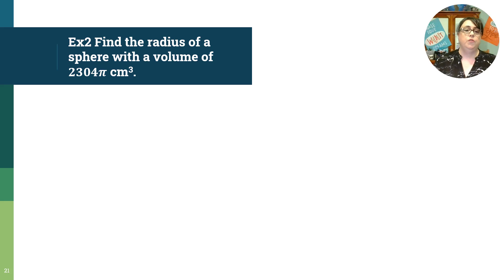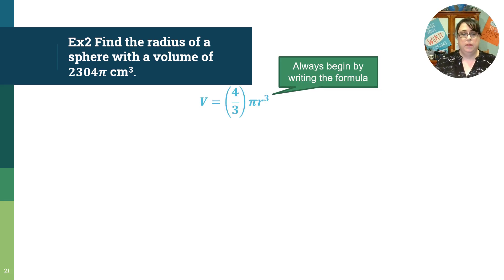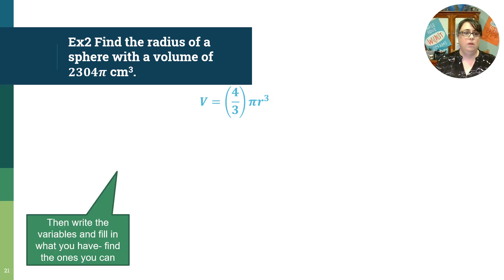Example two: find the radius of a sphere with a volume of 2,304 pi centimeters cubed. We start just like the last one, where we begin by writing the formula. Volume equals four thirds pi r cubed. Then we write down the variables. Let's go back into the problem and look at what we have been given. It says find the radius.